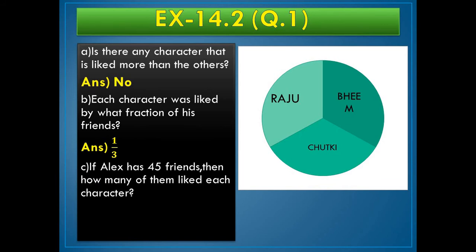If Alex has 45 friends, then how many of them liked each character? Because each character is liked by a fraction of 1 by 3, so 1 by 3 into 45 equals 15 friends.